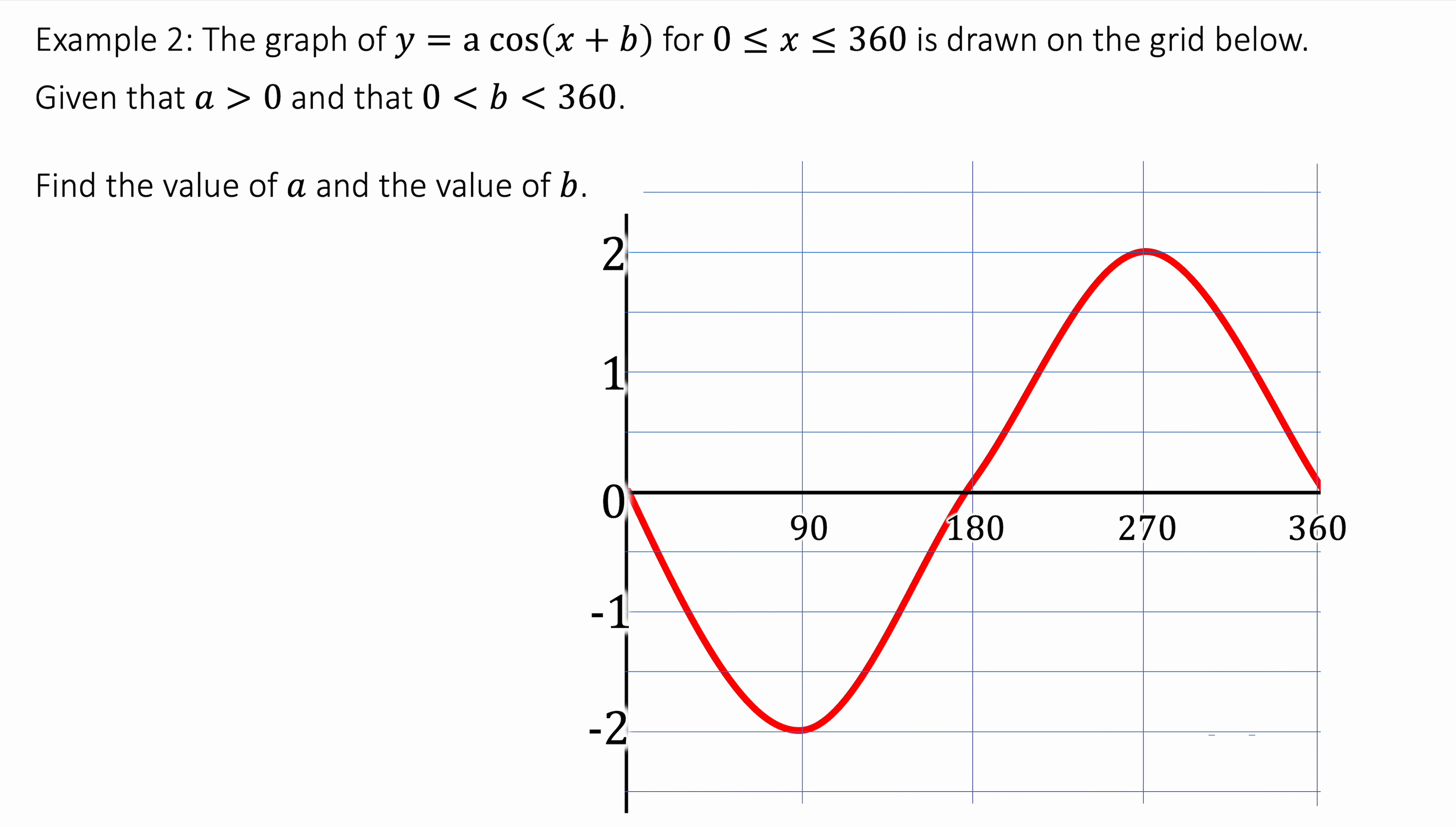So we've got the graph here. And we're trying to find the equation of this red line from the graph. And what I immediately see is that it is similar to the original cos graph. But we've transformed it somehow.